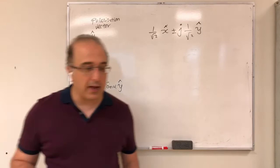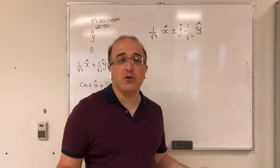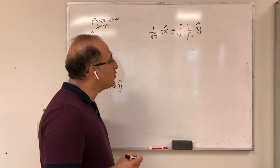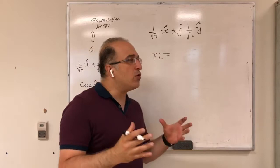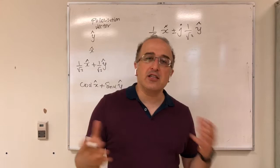If something is neither linear nor circular, then you have elliptical polarization. The advantage of the polarization vector is that I can define something called the polarization loss factor (PLF). This factor shows how much power is lost between two antennas because of polarization mismatch.